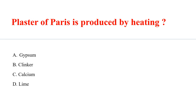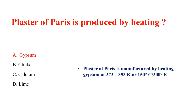Plaster of Paris is produced by heating gypsum. It is manufactured by heating gypsum at 373 to 393 Kelvin, or 150 degrees Celsius, or 300 degrees Fahrenheit.